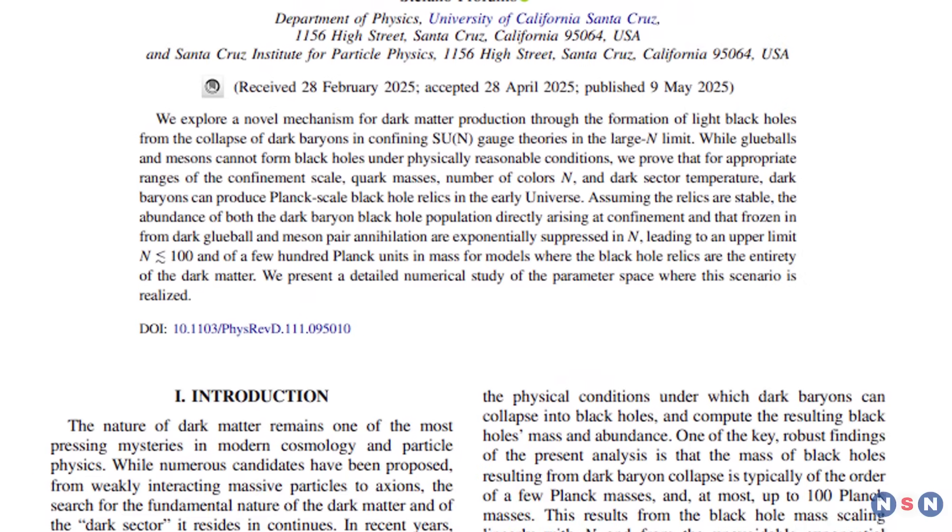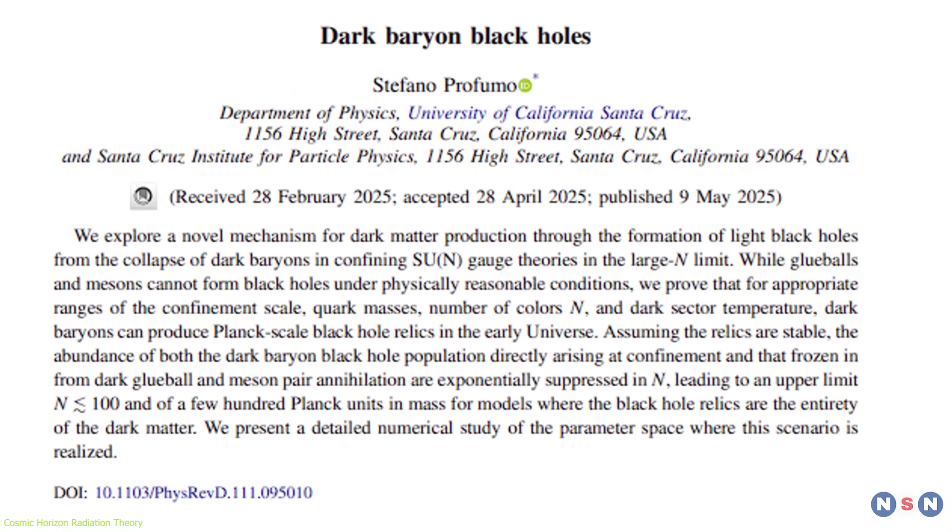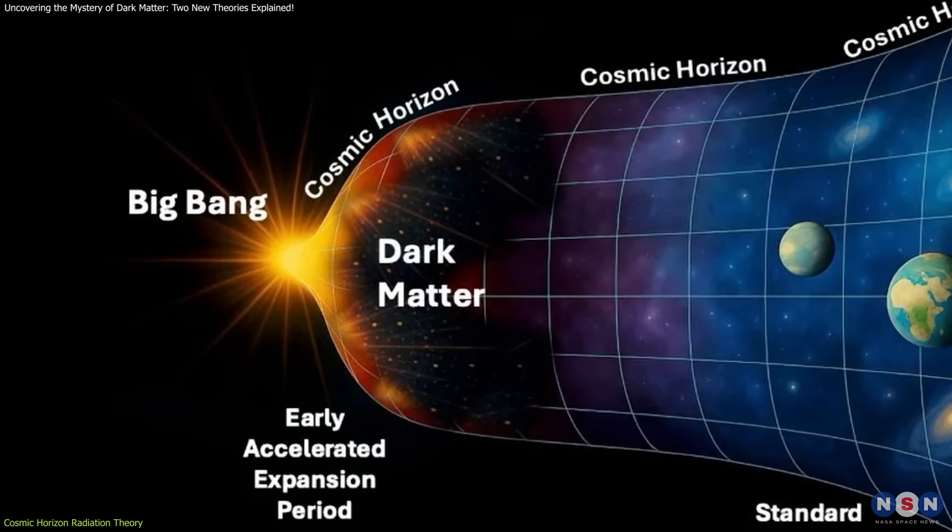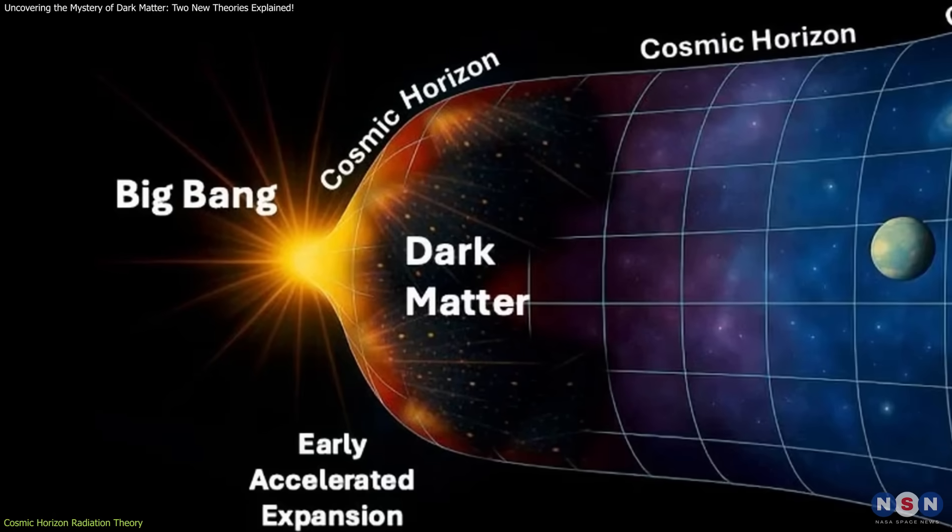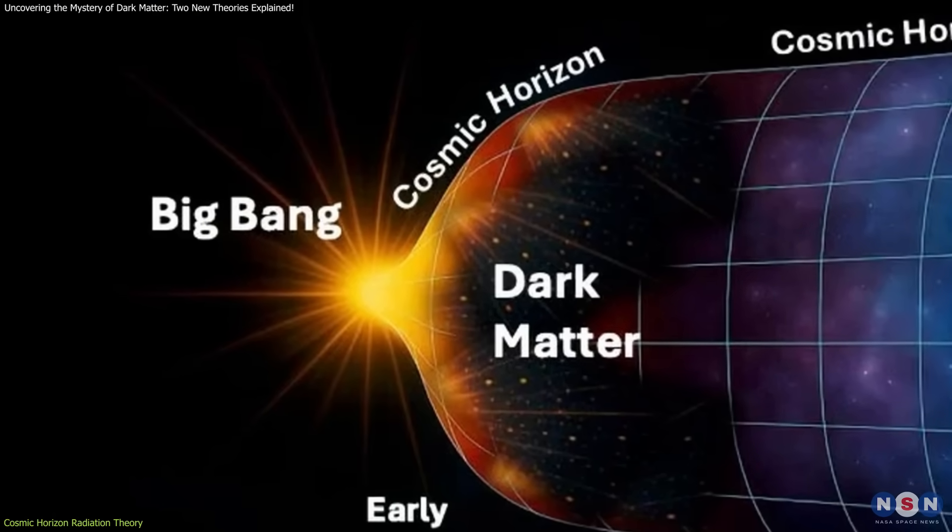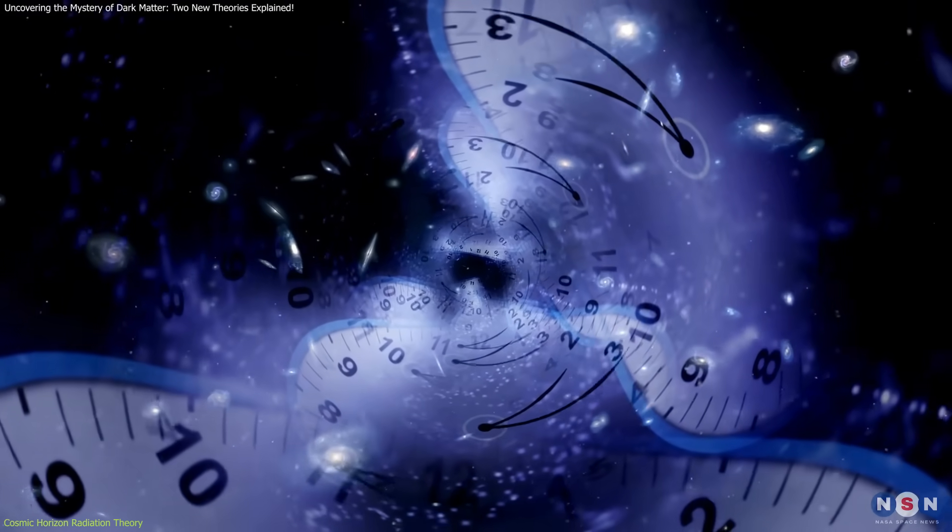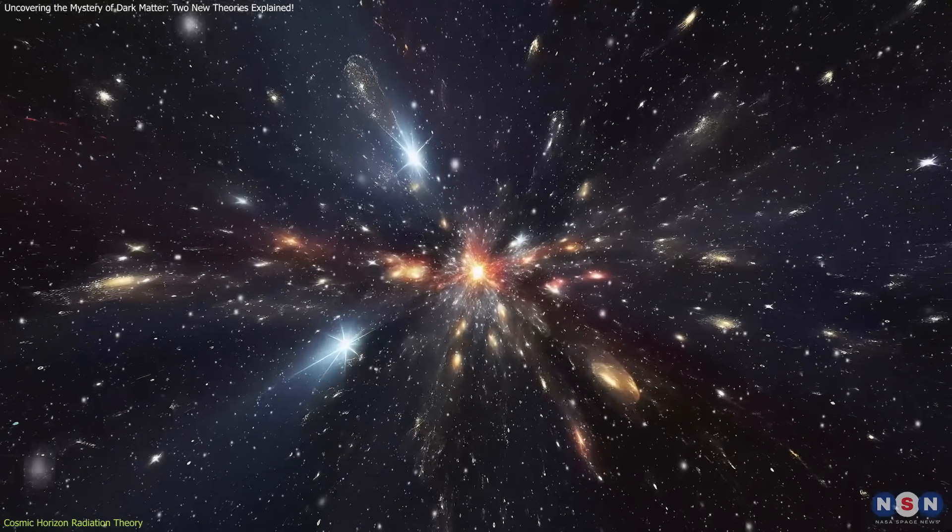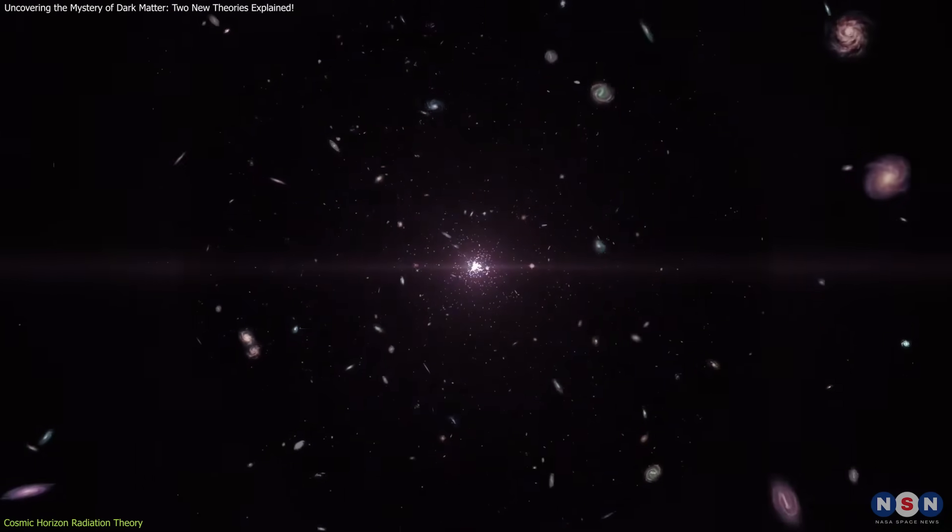The second theory, published in May 2025, offers a completely different explanation. Dark matter might have been produced by the universe's cosmic horizon. Similar to how black holes have an event horizon, the universe has a boundary called the cosmic horizon. This marks the limit beyond which we can no longer observe because space-time is expanding at an accelerating rate. This theory suggests that during a brief period of accelerated expansion, less extreme than the rapid inflationary phase that followed the Big Bang, quantum effects near the cosmic horizon could have generated particles.